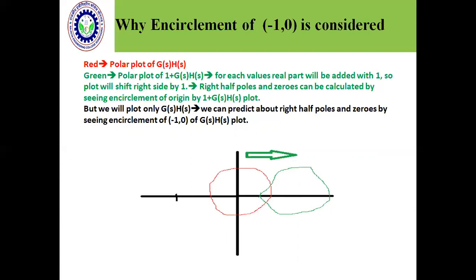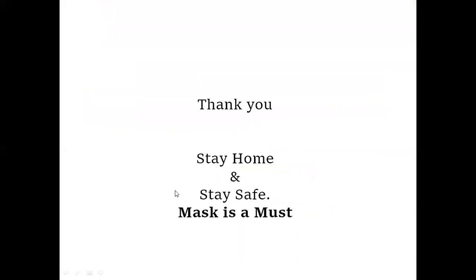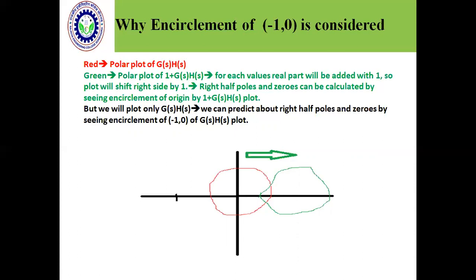So this means that for 1 plus G(s)H(s), we will not look at the origin of G(s)H(s), and for 1 plus G(s)H(s) study, we will look at which encirclement? Minus 1,0. I hope that it will be clear that if we plot G(s)H(s), how can we study 1 plus G(s)H(s) at minus 1,0.